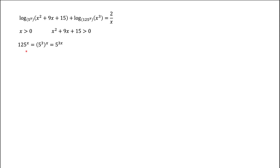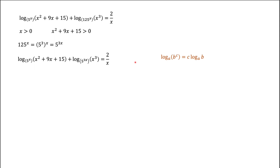So we have two conditions to satisfy to solve this logarithmic equation. Now, notice that 125 is 5 cubed, which means 125 to the x power is 5 to the power 3x. So we replace 125^x with 5^(3x). We also need a couple of facts from logarithms: the exponent in the argument can be pulled out from the logarithm, and the exponent in the base can also be pulled out, but as 1 over c rather than c.